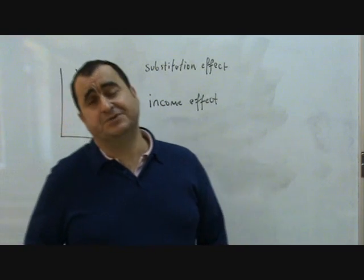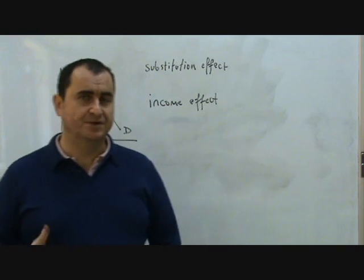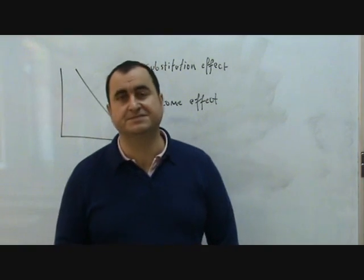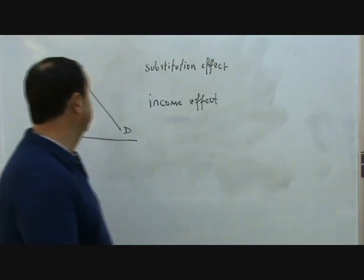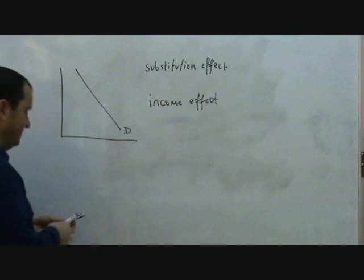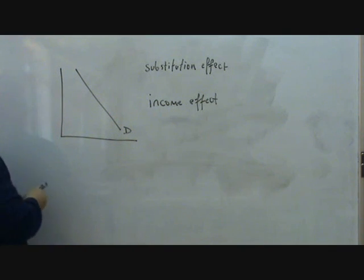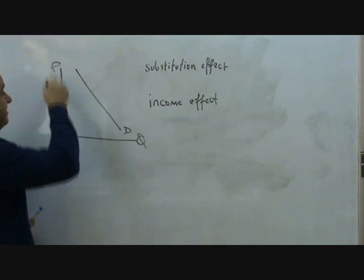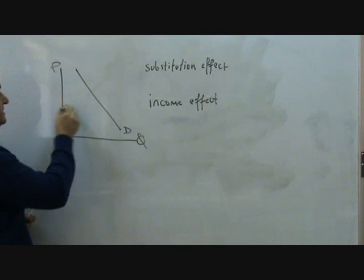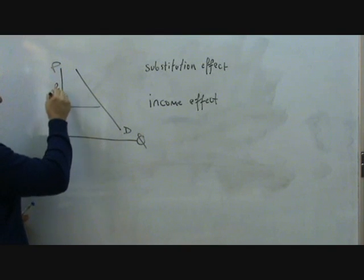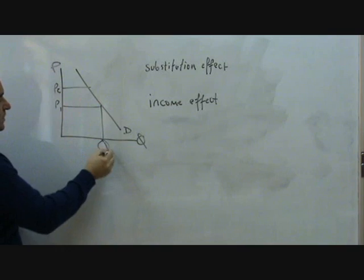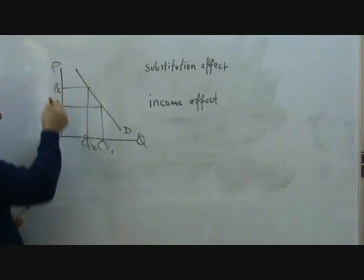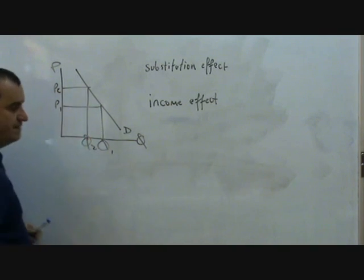Hello, I want to explain in this video one of the most basic ideas in economics, which is why demand curves slope downwards. Demand curves slope downwards when plotted against price and quantity, which means that if the price of a good rises from P1 to P2, then we buy less of it, and vice versa, if the price falls we buy more of it.